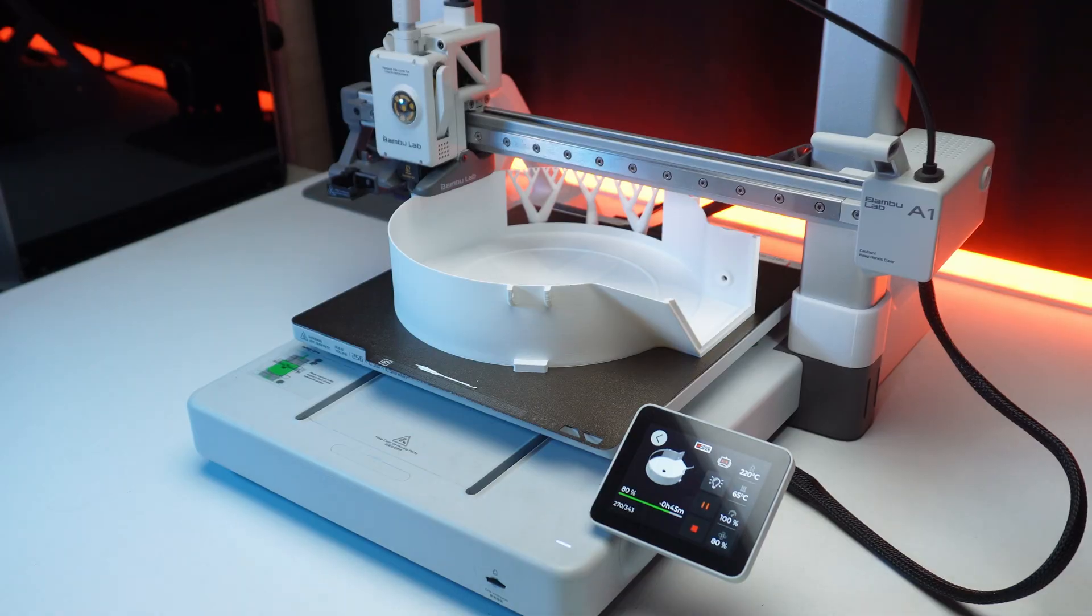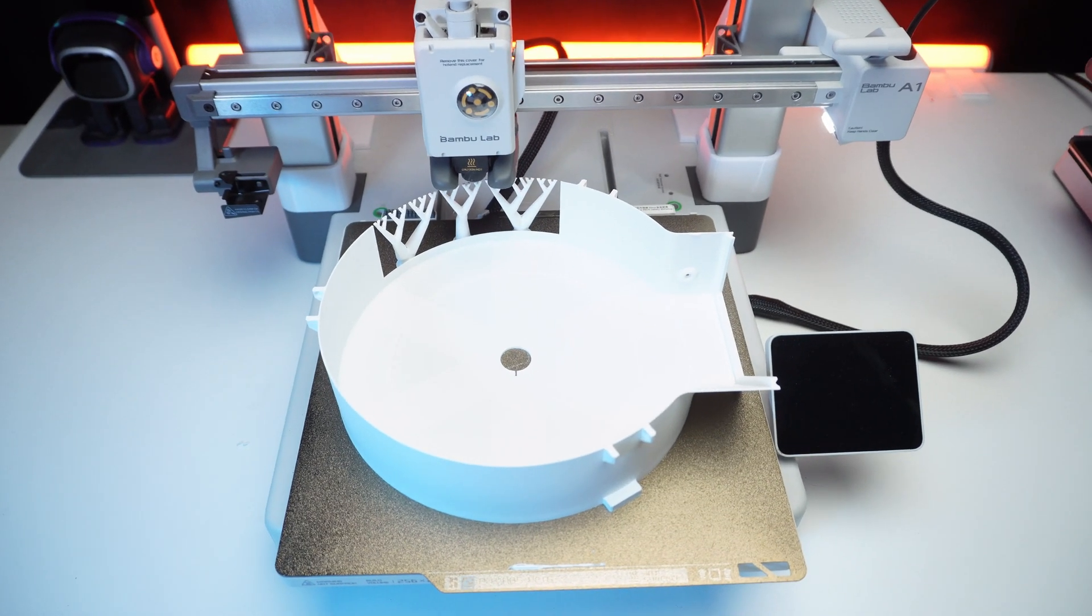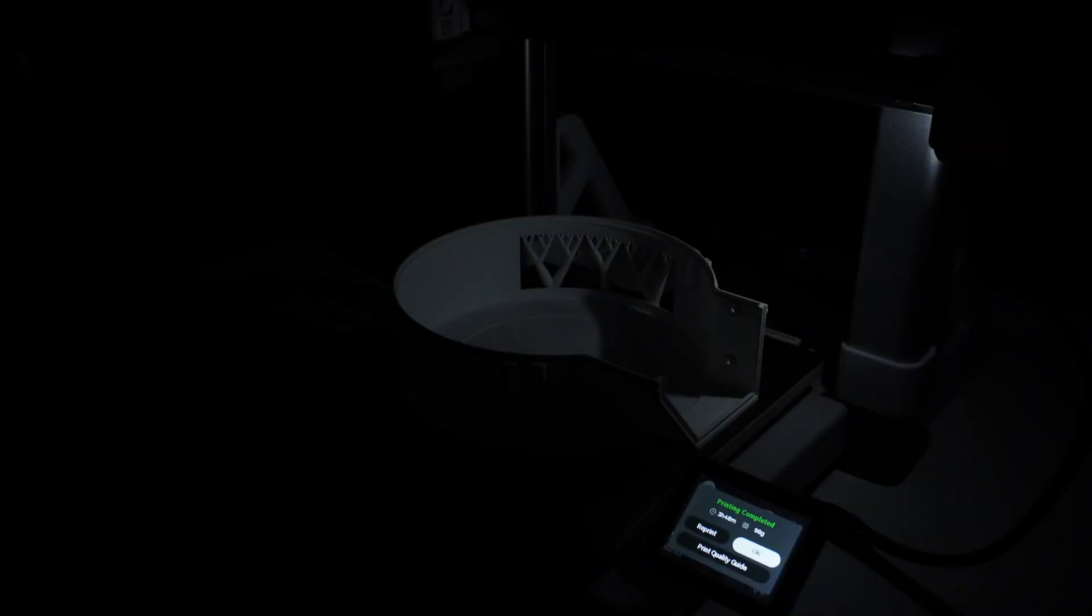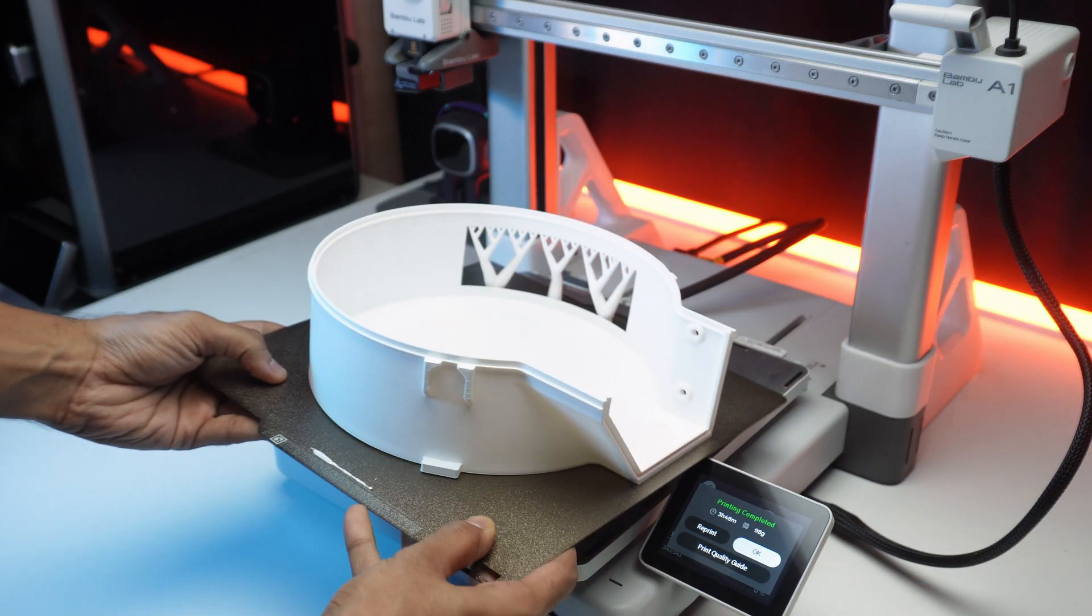I am using the BambuLab combo to print all the parts for the filament spool enclosure. The speed of the A1 made quick work of this. The precision ensures every part fit perfectly.